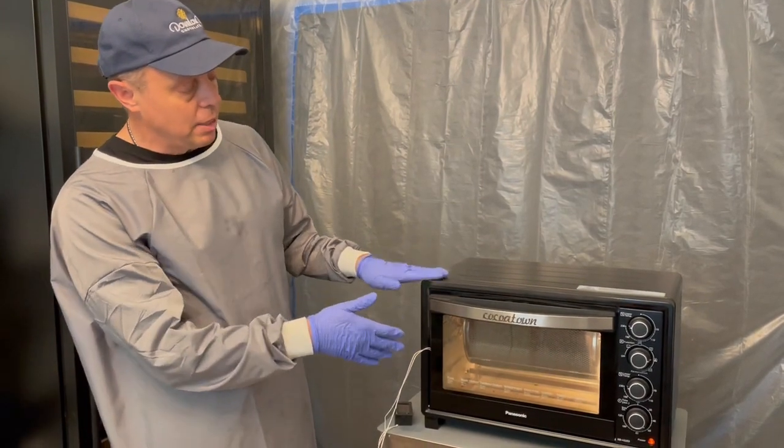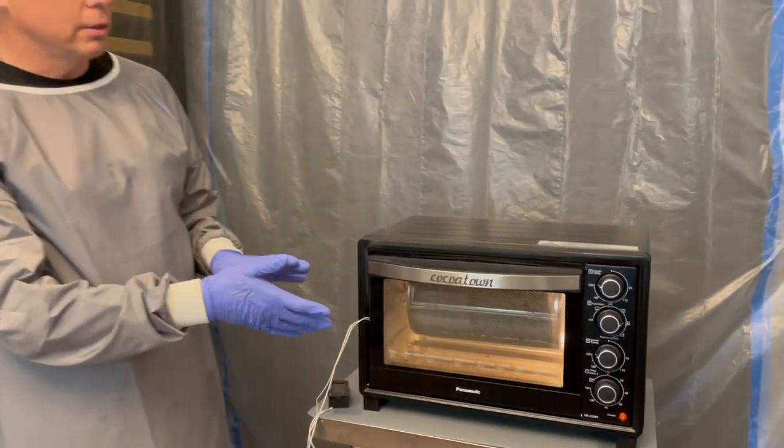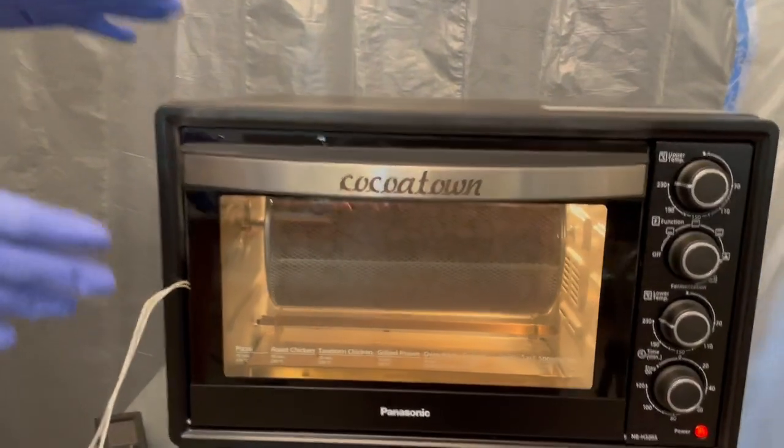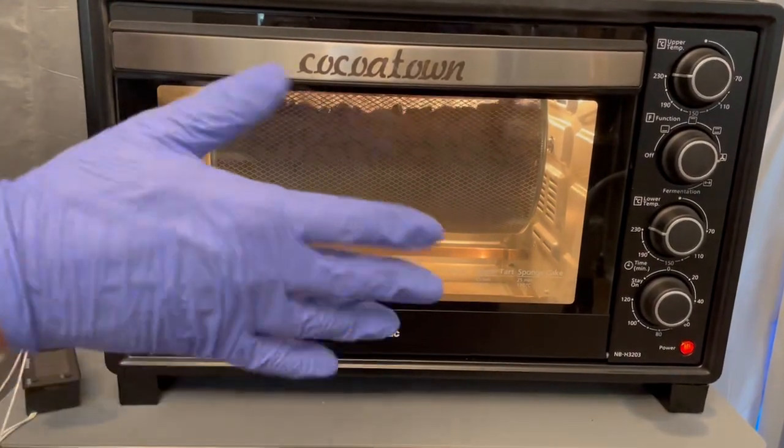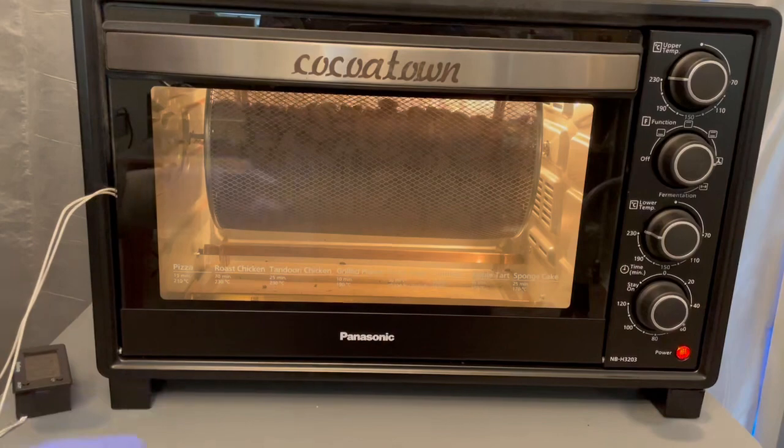But we've made some minor modifications to our Coker Town roaster here. So this is a 220 volt power roaster in Celsius here. We usually have it maxed out.